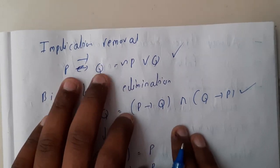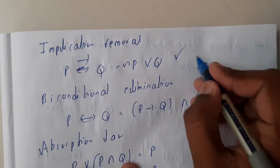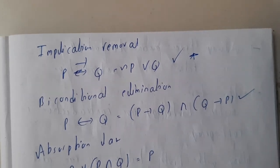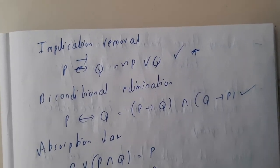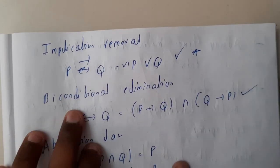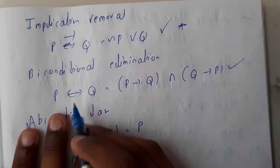Basically, single implication gives the result in this way: P implies Q is nothing but negation of P∨Q. Please remember this, it's really important because we'll be using it in problems. Bi-conditional elimination: double implies means you can write it in this way, P implies Q and Q implies P.